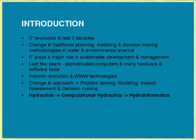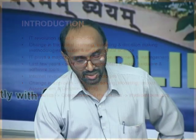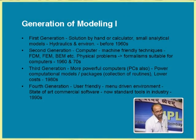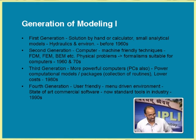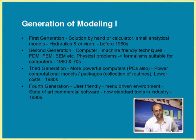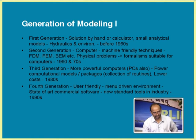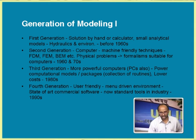There is hydraulics, then computational hydraulics, then hydroinformatics. You can see five generations of models. The first generation is solution by hand or calculator, small analytical models — hydraulics and environmental work before 1960s. The second generation is numerical methods like finite difference and finite element methods that came into picture, requiring computers. Machine-friendly techniques like FDM and FEM came into picture and physical problems could be solved using computers — developments of the 1960s and 70s.